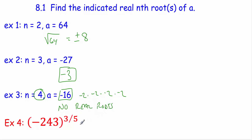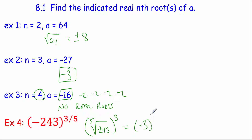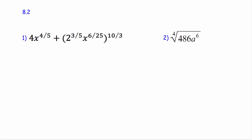Down here we have negative 243 to the three-fifths. Essentially, I want the fifth root of negative 243 first, then take that to the third power. What number times itself five times equals negative 243? That's negative three. Then negative three times negative three times negative three is negative 27. That's 8.1.